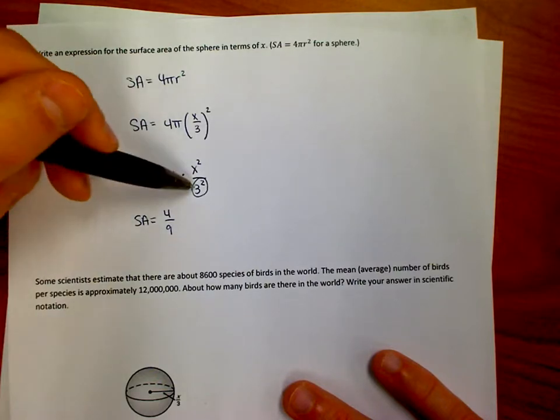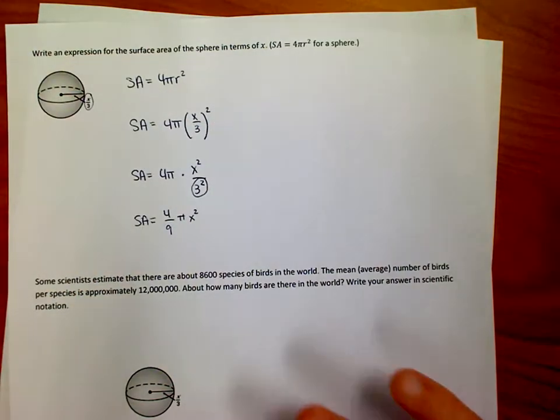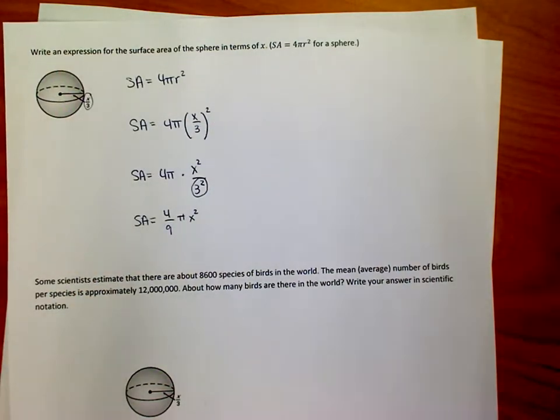So, it would be 4, this is the 9 that comes from the 3 squared, we're dividing by, we have pi x squared. So, we would rewrite it as 4 ninths of pi x squared.